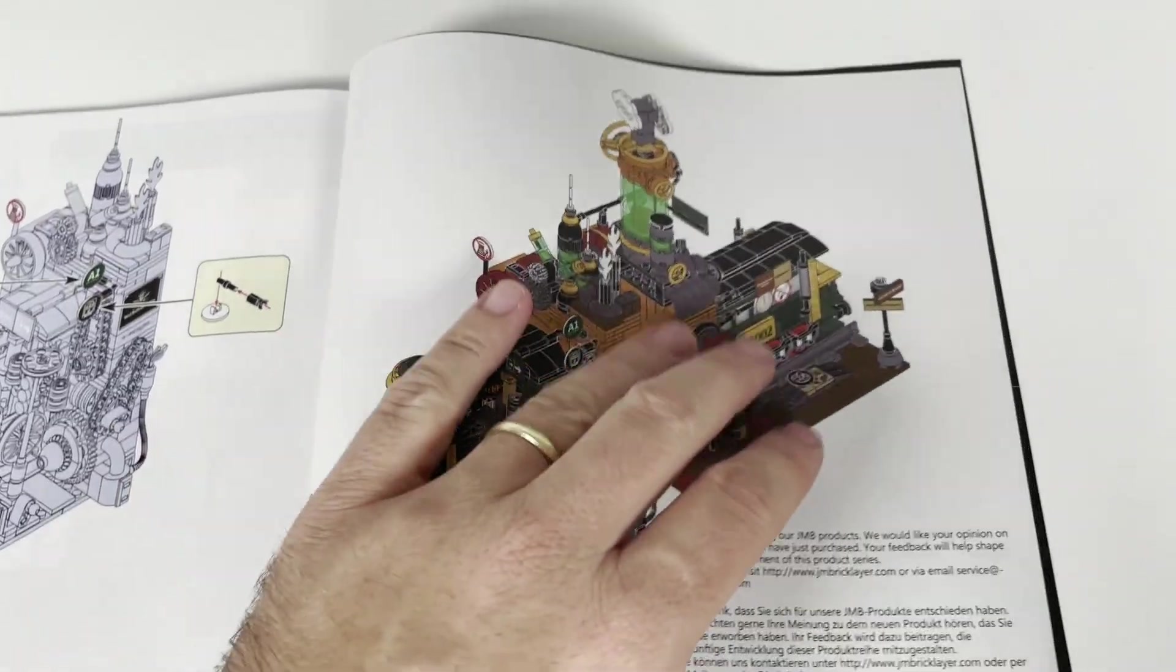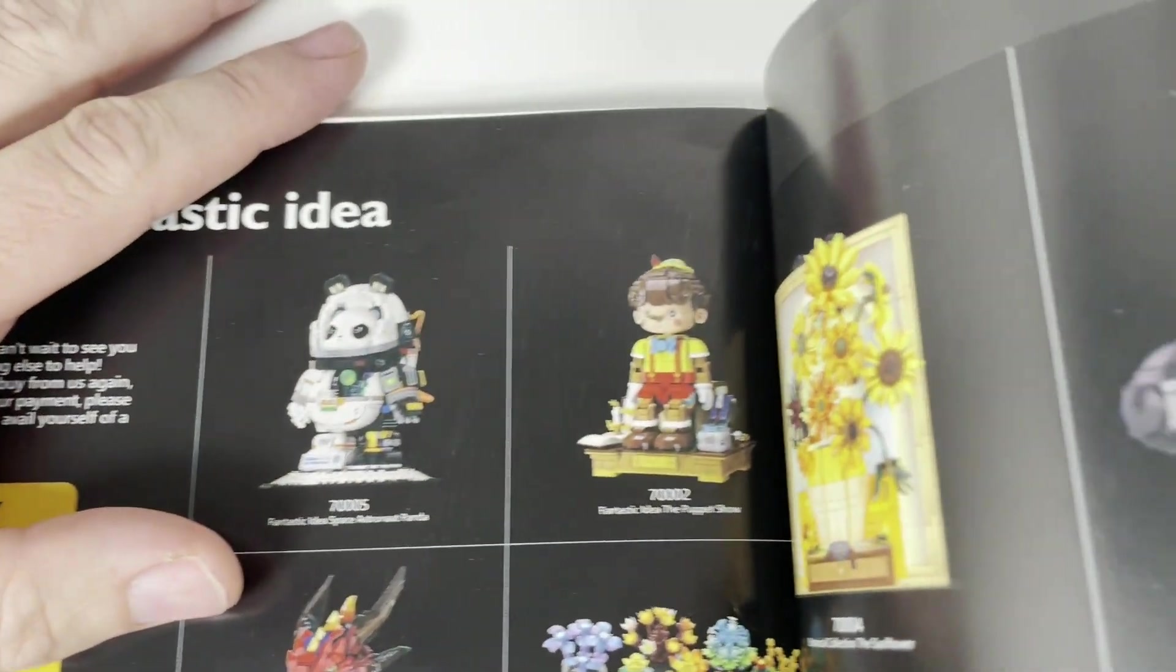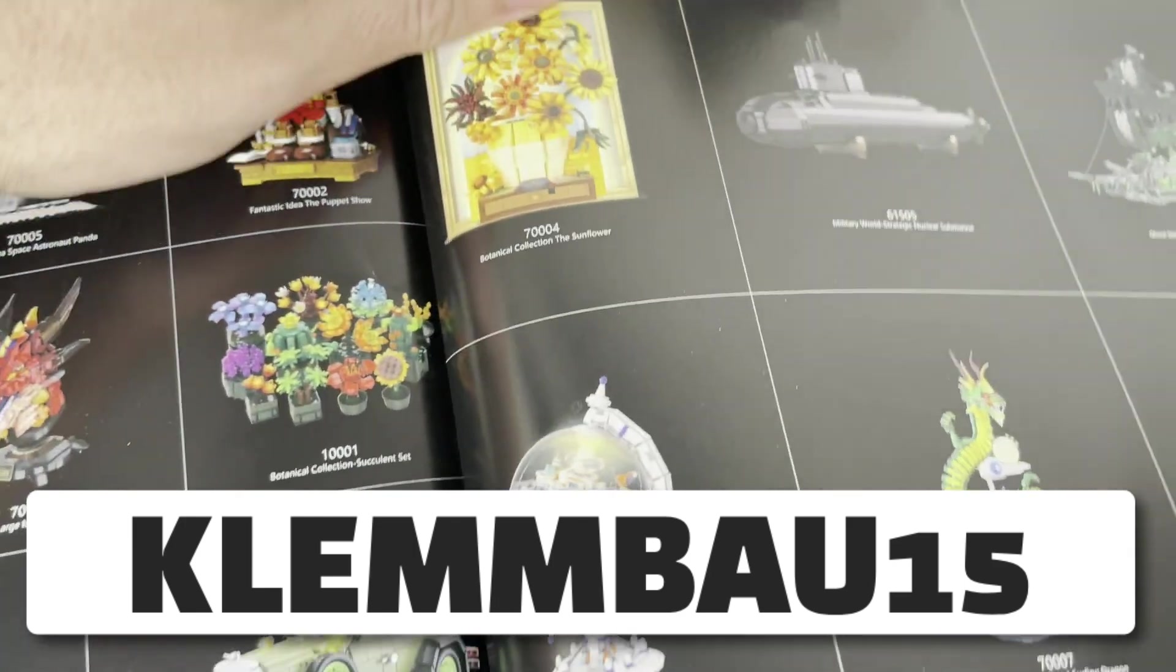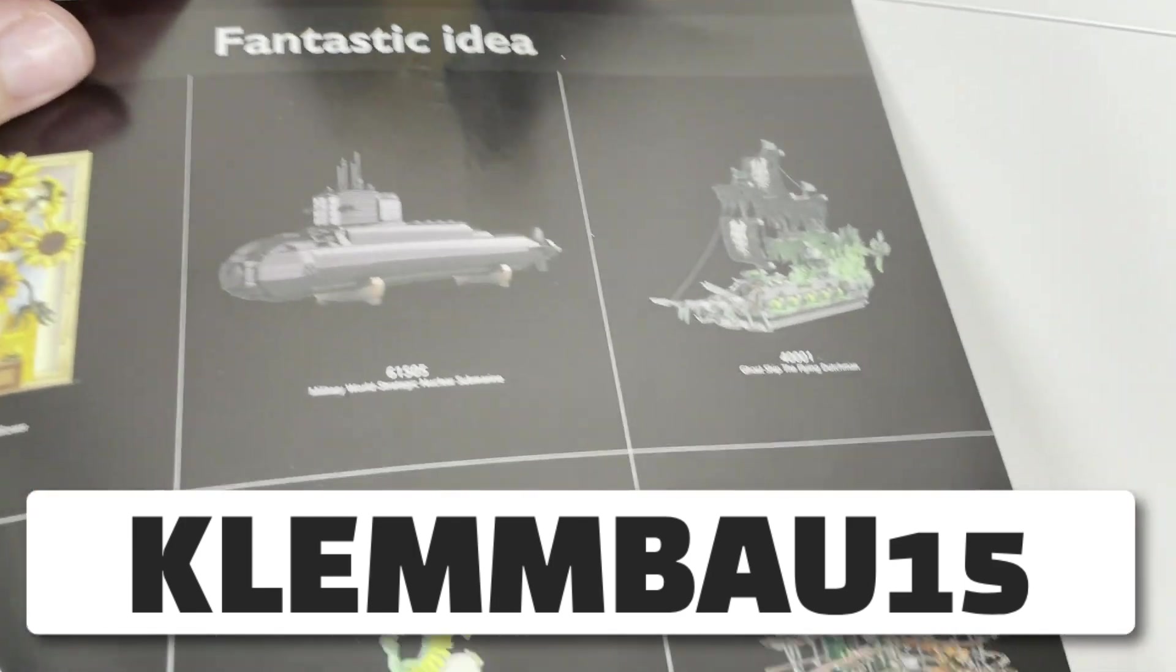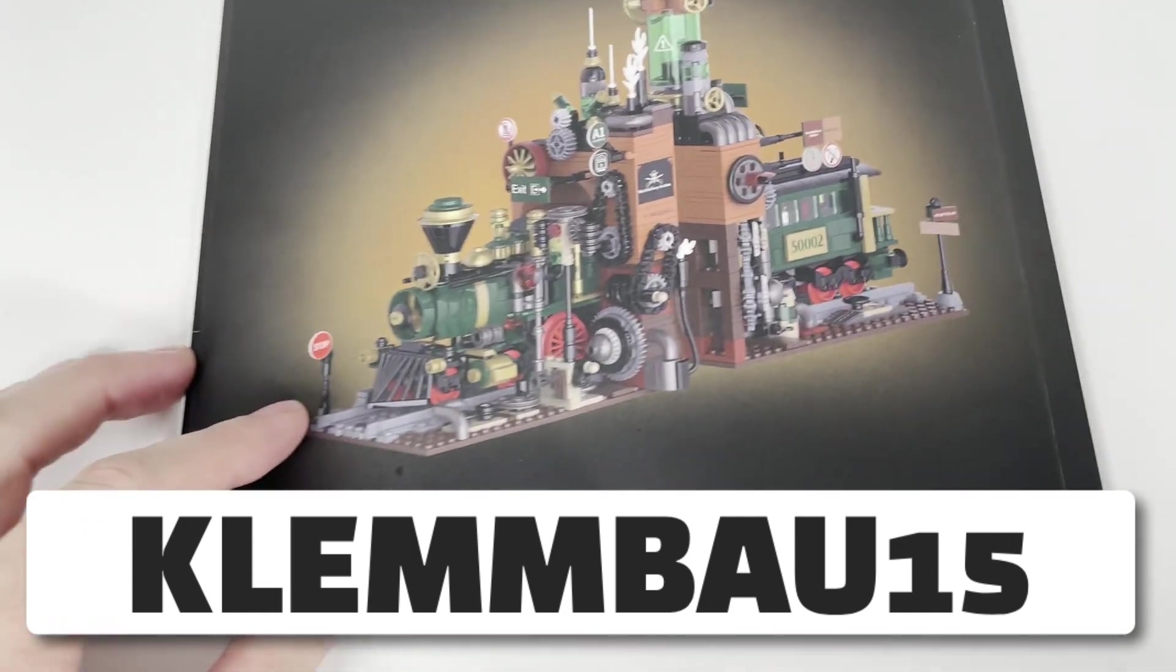Then you can see some other sets JM Bricklayer offers. If you want to buy any set, you can use my affiliate link and you get 15% off. Just use the code KLEMBOW15. You don't have any extra costs, but you support my channel and make videos like this possible. Thank you very much in advance.